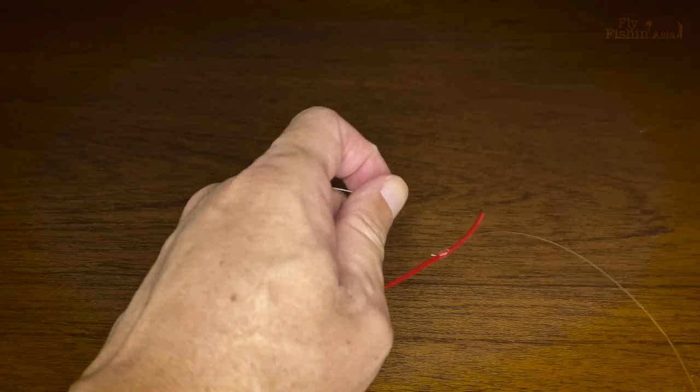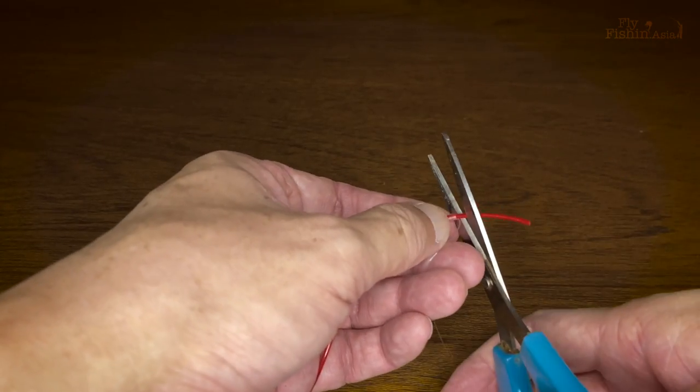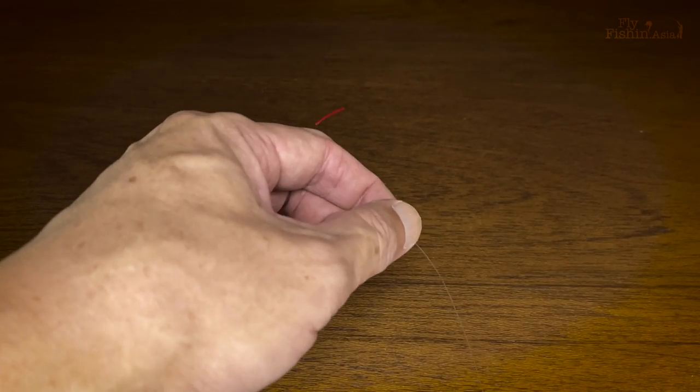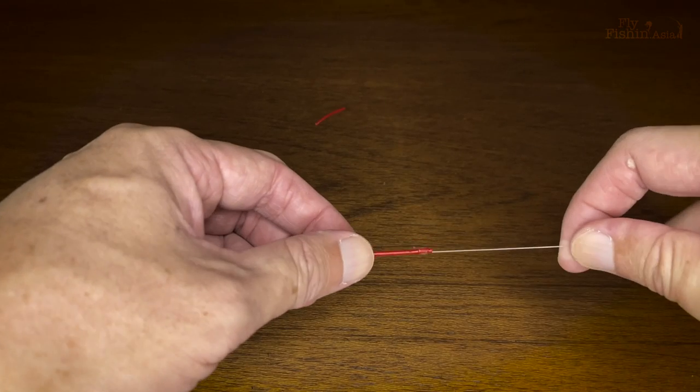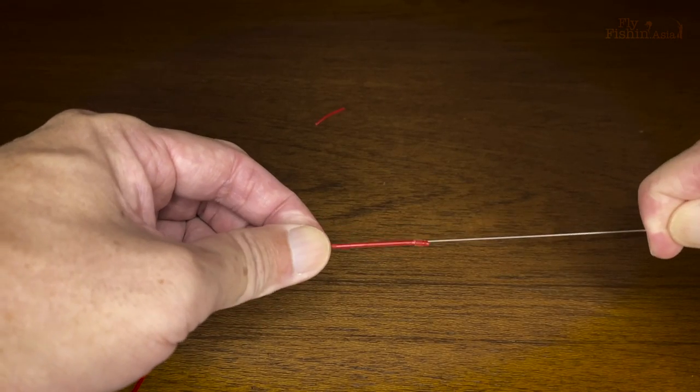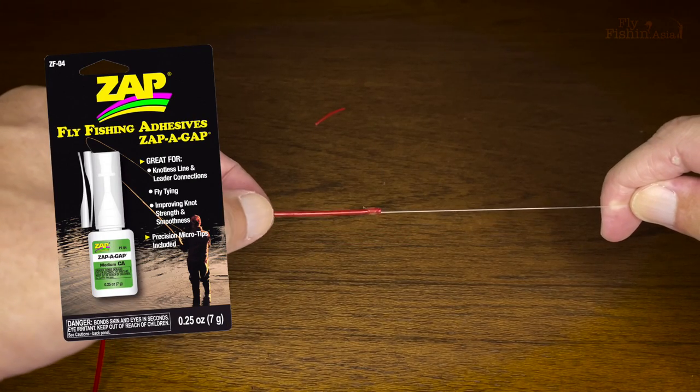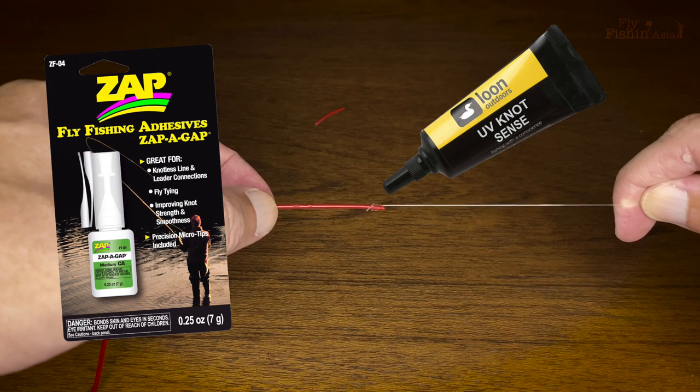Now all you need to do is trim off the tippet end and cut off the end of the fly line. Make sure they are all neatly wrapped around. If you want, you can put a dab of super glue or Zap-A-Gap or knot sense for extra security.